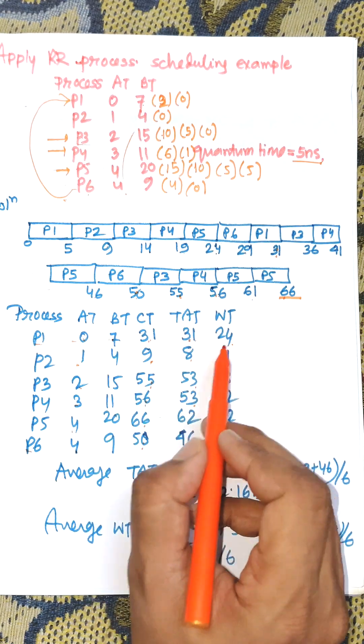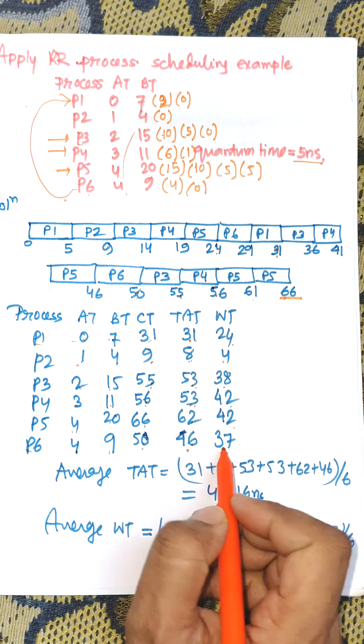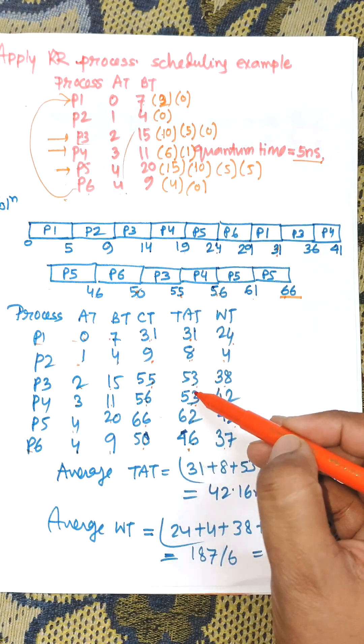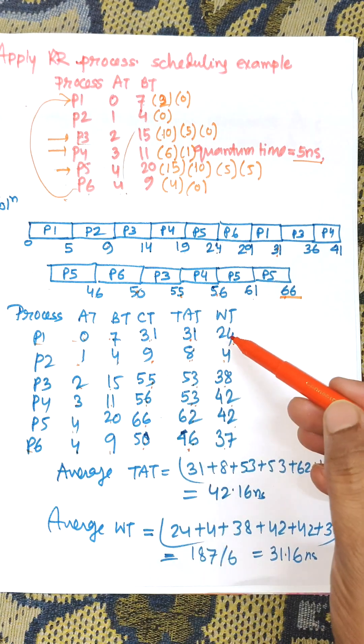Now waiting time is turnaround time minus burst time: 31 minus 7 equals 24, 8 minus 4 equals 4, 53 minus 15 equals 38. Average turnaround time is 31 plus 8 plus 53 plus 53 plus 62 plus 46, divided by 6.